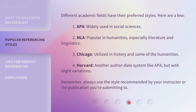Different academic fields have their preferred styles. Here are a few: First, APA — widely used in social sciences. Second, MLA — popular in humanities, especially literature and linguistics. Third, Chicago — utilized in history and some of the humanities. Fourth, Harvard — another author-date system like APA, but with slight variations. Remember, always use the style recommended by your instructor or the publication you're submitting to.